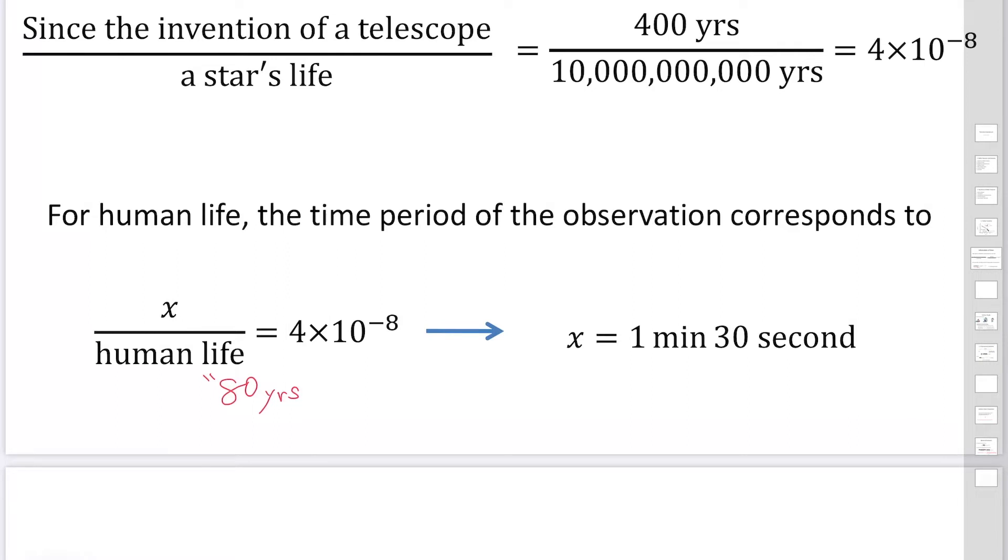you can calculate x by converting the year to seconds. One year is about 30 million seconds. Then you can calculate, it's about 90 seconds, about 1 minute 30 seconds. How can we understand other people in 90 seconds? It is almost impossible.